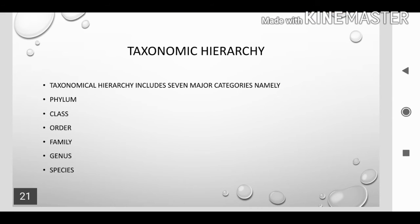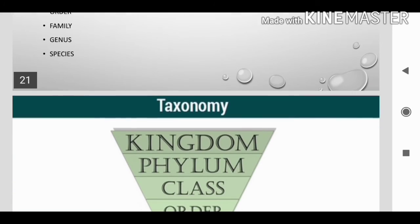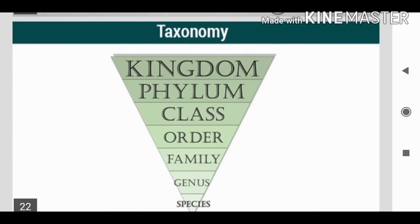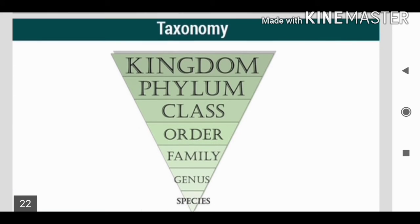Taxonomical hierarchy. There are seven major categories: Kingdom, Phylum, Class, Order, Family, Genus, and Species. This picture shows the taxonomical hierarchy.